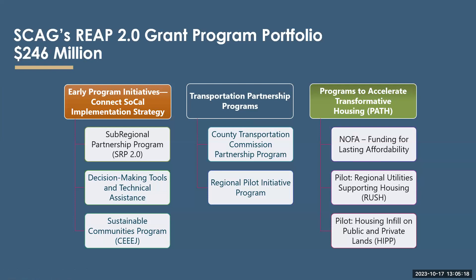Building off the success of the REAP 1.0 program, the state advanced $246 million to SCAG to create and fund the Regional Early Action Planning Program 2.0. This expands on the first REAP program with a broader focus, including integrating housing and climate goals, allowing for broader planning and implementation investments, including infrastructure investments that support infill developments. The broad objectives of REAP 2.0 are to accelerate infill development that facilitates housing supply choice and affordability, affirmatively further fair housing, reduce vehicle miles traveled, provide local technical assistance and resources, and strategically complement housing integration with better access to transportation options, including transit and other multimodal services.